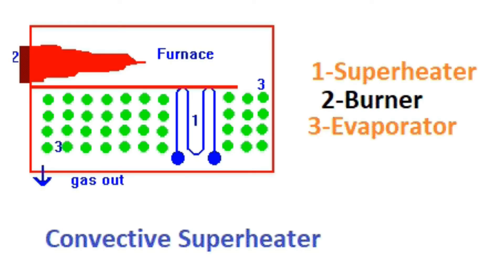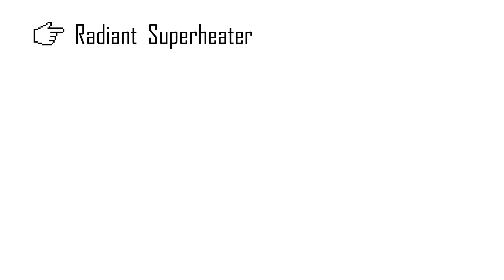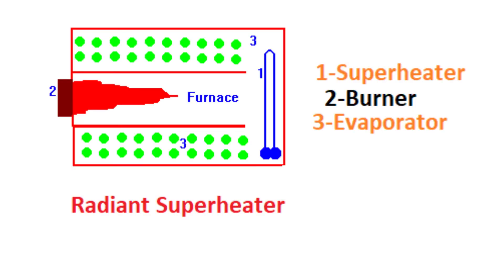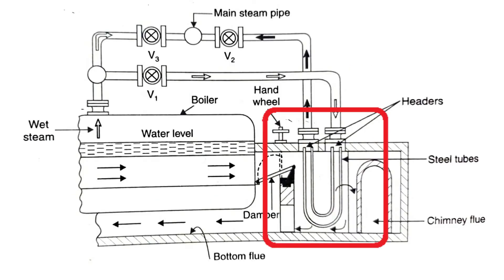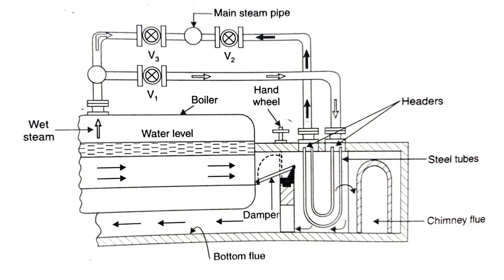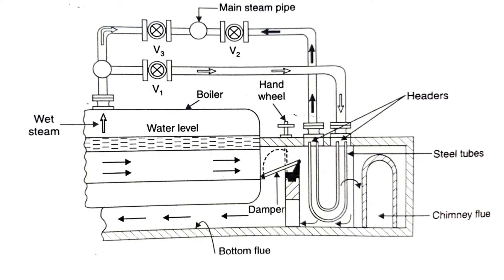A convective superheater makes use of heat in flue gases, whereas a radiant superheater is placed in the furnace and its tubes receive heat from the burning fuel through a radiant process. The radiant type of superheater is generally used where a high amount of superheat temperature is required. It consists of steel headers to which are attached solid drawn U-tubes of steel.